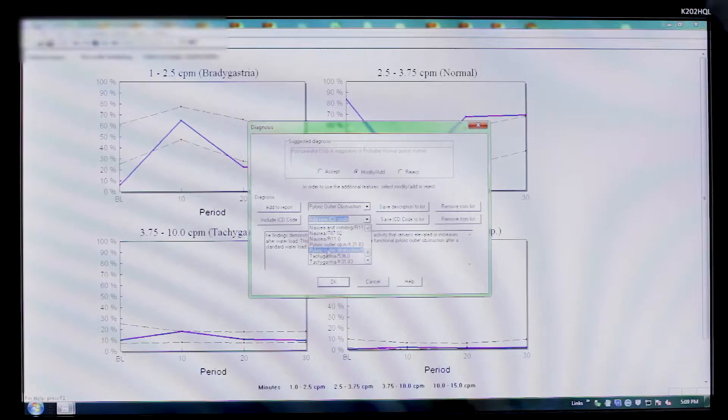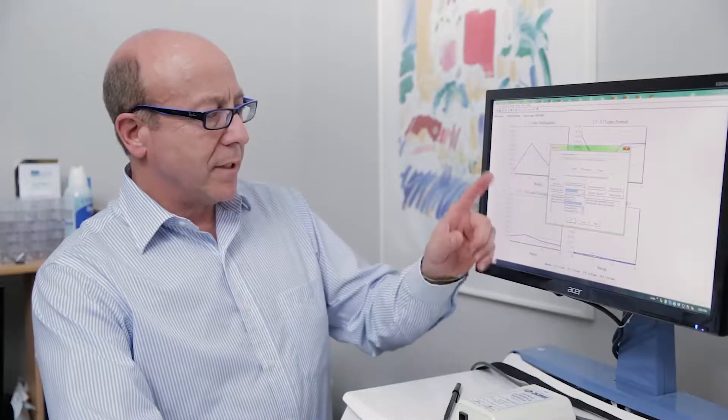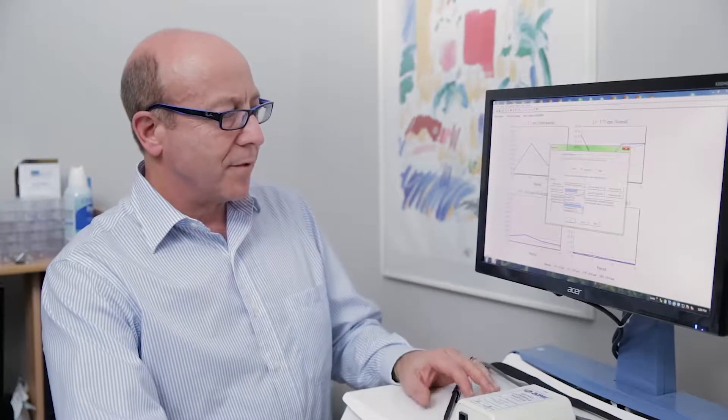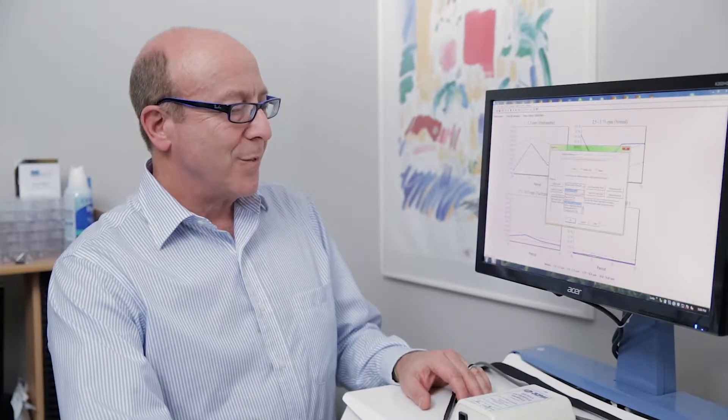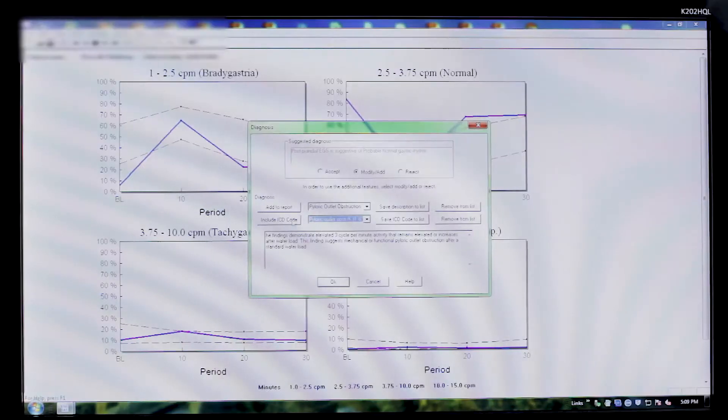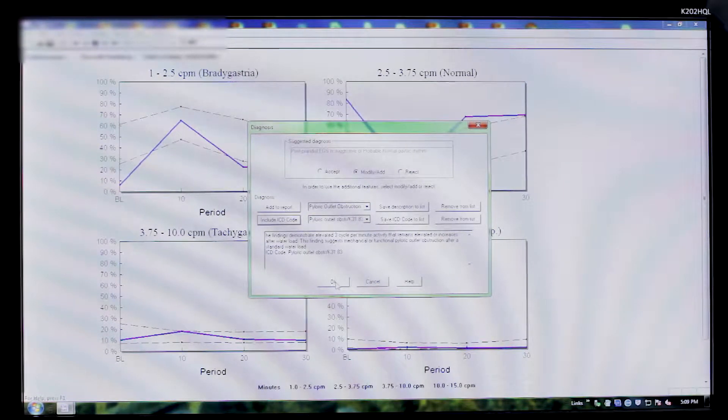I'm going to pick Pyloric Outlet Obstruction. These are the current ICD-10s. These are ICD-9s from the previous ICD-9 period of time. And I can add that to the report also. And then I will click OK.